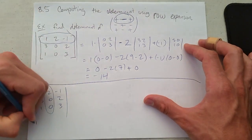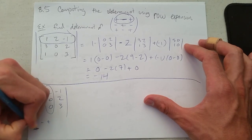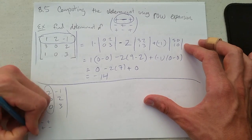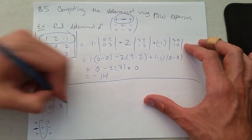So our sign matrix, we're going to go minus, plus, minus.